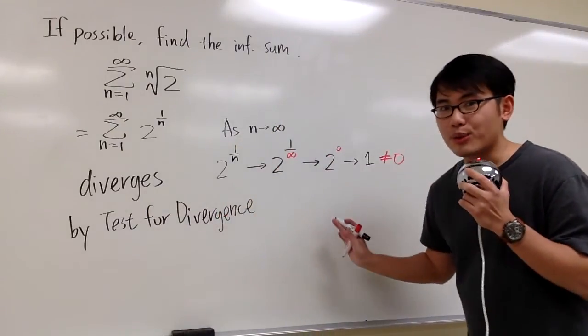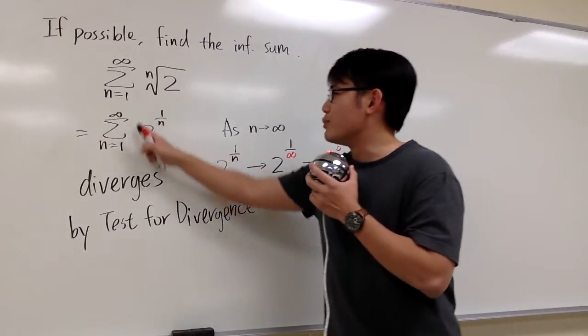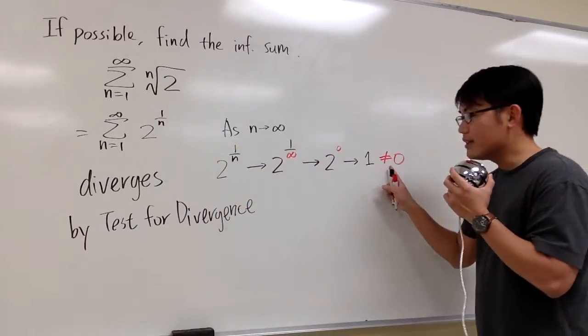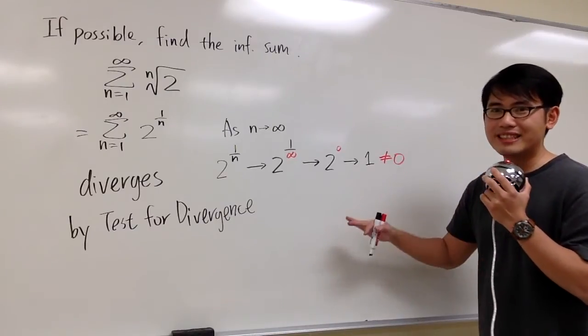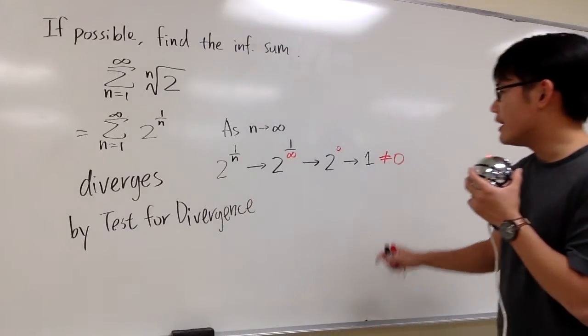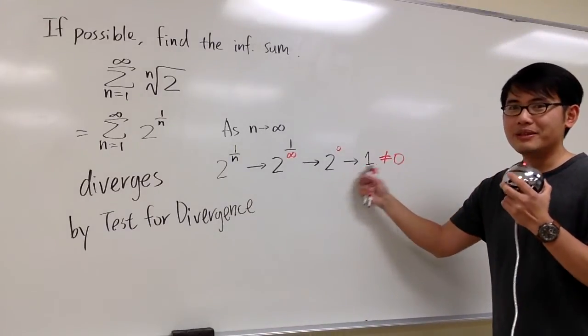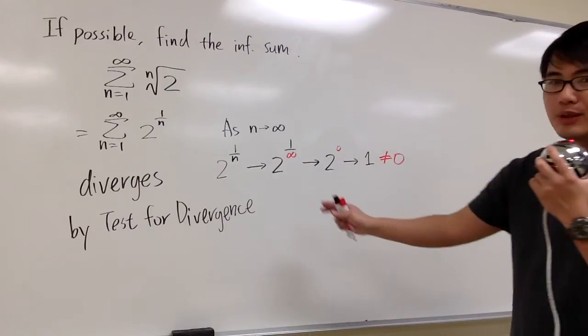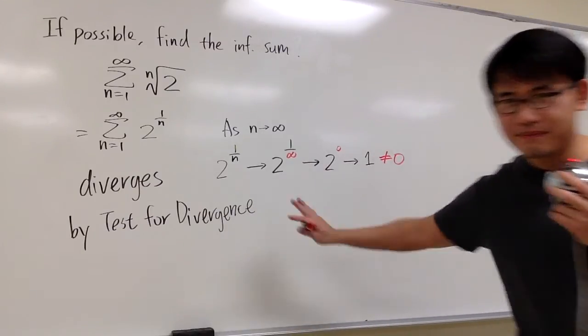So that will be the end of the story. Whenever you just look at the expression right here, take the limit as n goes to infinity, if we don't get 0, that's good, because we can stop and we can draw a conclusion, say this diverges. But then, if this was equal to 0, in that case, we'll have to do more work. But then, luckily, in this case, we are done. So this is it. That's it.